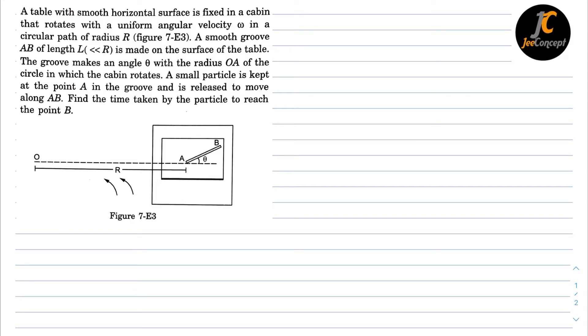So in this problem, the entire system is rotating with angular velocity omega and the length of AB is much smaller than R. Let's say at any instant the object is somewhere here, sliding along AB.